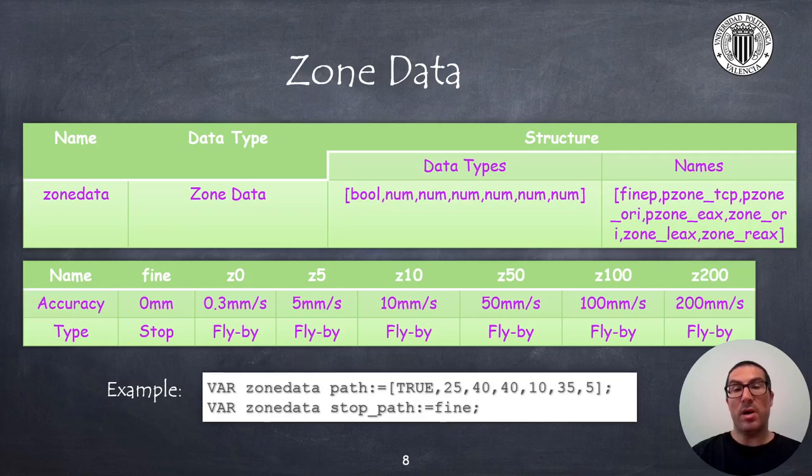Therefore, to define the accuracy of the points of a trajectory, we will use the data type zone data that allows us to define if the point is a stopping point or a flyby point, and the size of the previously mentioned regions. It is a data structure that contains a boolean variable to define whether it's a stop or a flyby point, and six numerical values that define the size of the zone. Please refer to the technical reference manual for details, because what I recommend, indeed, is just simply to use one of the predefined values that you can use for defining zone, like the ones listed in the table. For instance, the defined variable is used to define a stopping point, while the predefined variables Z0, Z5, Z200, among others, will allow you to intuitively define the size of the zones that you want.